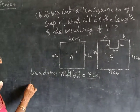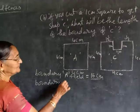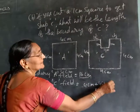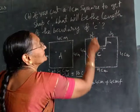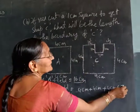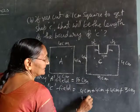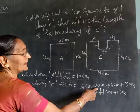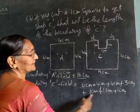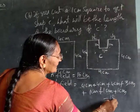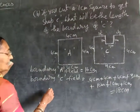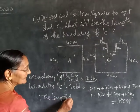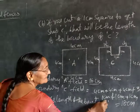Now you will find the boundary of shape C. That is: 4 centimeters plus 4 centimeters plus 4 centimeters plus 3 centimeters plus 1 centimeter plus 1 centimeter plus 1 centimeter. So: 4 plus 4 is 8, plus 4 is 12, plus 3 is 15, plus 1 is 16, plus 1 is 17, plus 1 is 18 centimeters. So the boundary of shape C is 18 centimeters. Therefore, the boundary of shape C is equal to 18 centimeters.